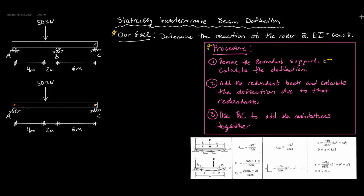There's going to be no deflection at A or C, and the beam will deflect like this. We're going to use superposition for this — I copied the superposition tables over here. In this case we have a load applied off-center, so we're going to use this set of equations. B in this case is going to be the distance from the roller support, so B equals four meters.